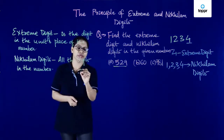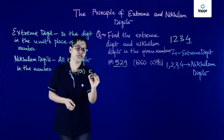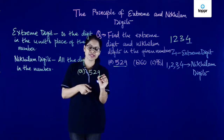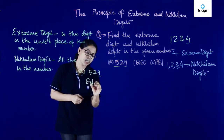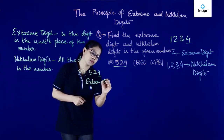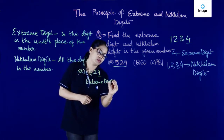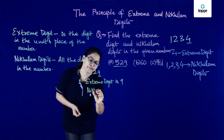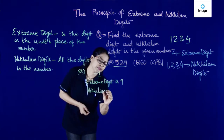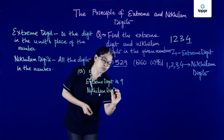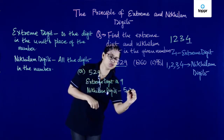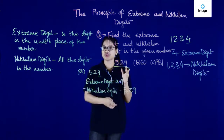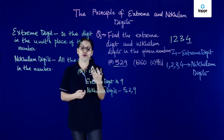The first number is 529. The extreme digit — that's the digit in the unit's place — is 9. The nickelam digits are all the digits: 5, 2, and 9. You can see that 9 is repeated, but all of them — 5, 2, and 9 — are called nickelam digits.